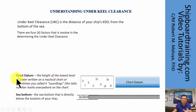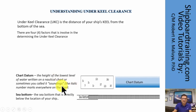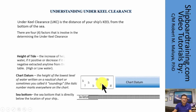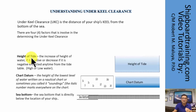The next factor is the chart datum. The chart datum is the height of the lowest level of water written on the nautical chart, also called the charted depth or soundings — it is actually the lowest astronomical tide of the area. The italic numbers marked everywhere on your chart represent the chart datum, which is the lowest level of water in the area.